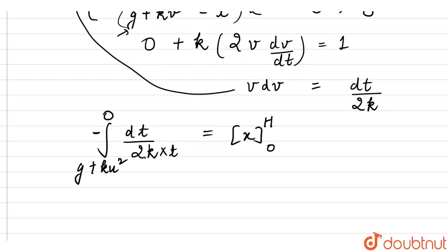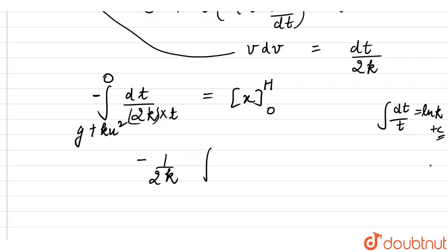Let's integrate. 2k is a constant, so let's take it outside the integral. The integration of 1 upon t is log t. Plus c when this is indefinite, but here it is definite integration. Therefore this integration comes out to be ln t.